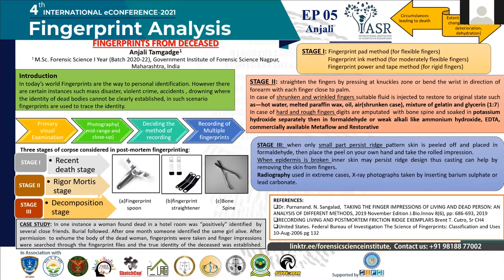As we all know, fingerprint is the most important evidence in today's world. It is the means of personal identification and individualization. However, there are certain cases such as mass disaster, violent crimes, accident, drowning, where the identity of a dead body cannot be clearly established — either the facial characteristics may have been destroyed or there are no other clues available for identification. In all such cases, the use of fingerprints is important to trace their identities.